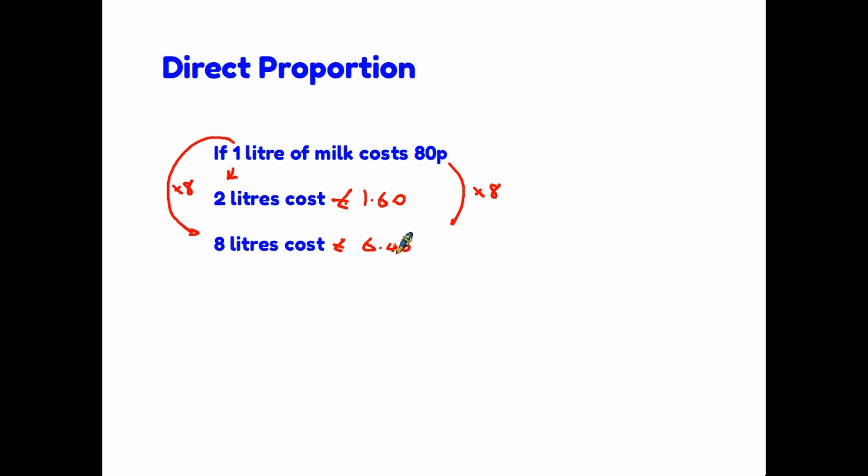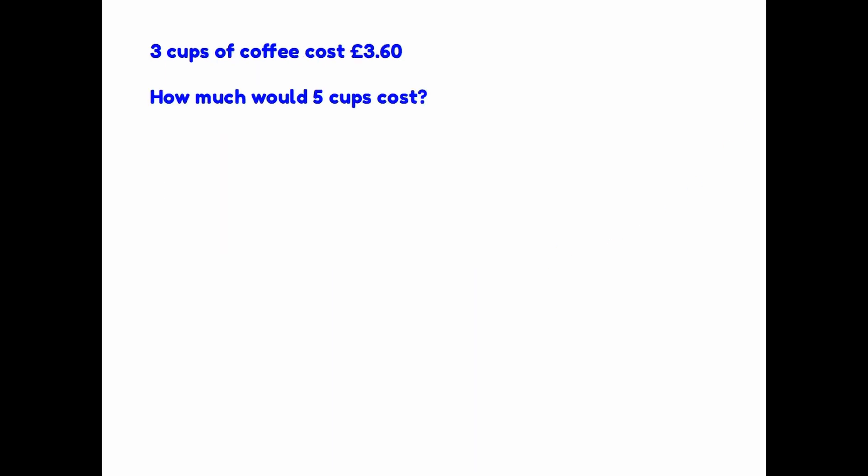As you can imagine, however, some of the questions that you might get asked in an exam are slightly more complicated, and we need to develop a new rule as to how to handle those. Let's have a look at an example. Here we are being told that three cups of coffee costs £3.60. The question is, how much would five cups cost? Now, we can't do what I just did with the litres of milk. We can't simply double or multiply, because the relationship between three and five is not so clear.